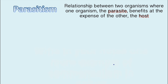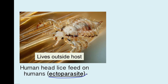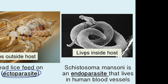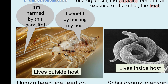The last type is parasitism. This is a relationship where one organism — the parasite — benefits at the expense of the other organism, called the host. There are two types of parasites: an ectoparasite, which lives on the outside of the host, such as human head lice; and an endoparasite, which lives inside the host — for example, an organism that lives in human blood vessels. The host is harmed by this relationship, which is a key feature of parasitism.